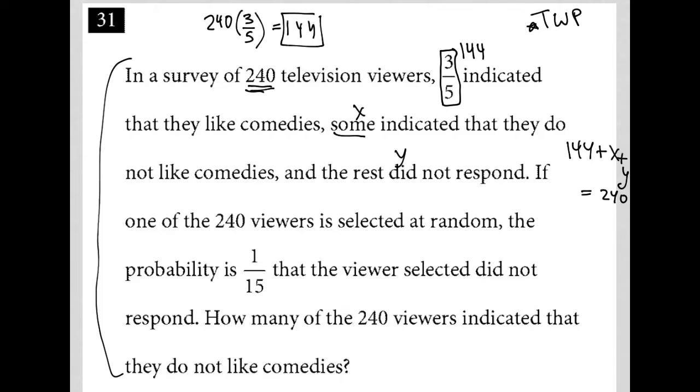If one of the 240 viewers is selected at random, which means it can come from either the 144 group, the X group, or the Y group, if one of the 240 viewers is selected at random, the probability is one-fifteenth that the viewer selected did not respond. Okay, so anytime I see the word probability on the SAT, I know that it's going to be a fraction, in which case the numerator is what you want, or the category that you're looking at, the category you care about,